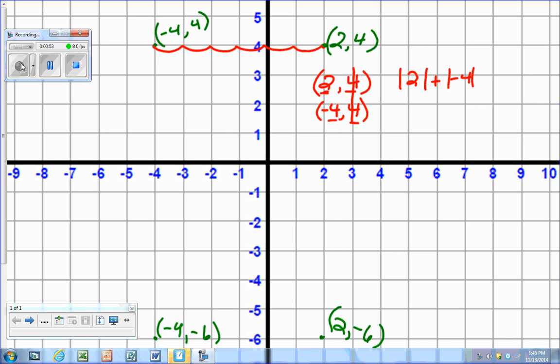So absolute value is the distance from 0. The absolute value of 2 is 2, and the absolute value of negative 4 is 4. So I would get 6 units, which is exactly what we got when we counted.